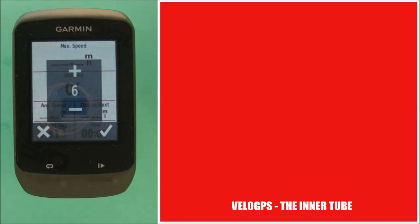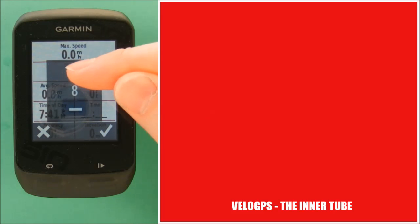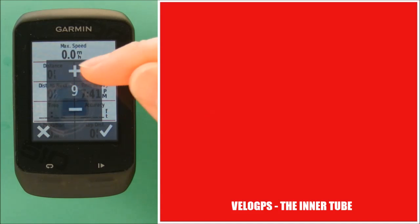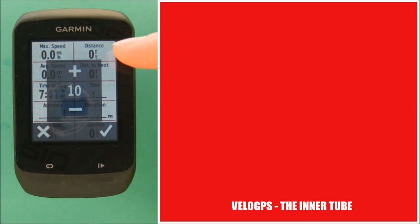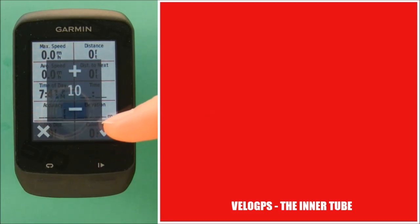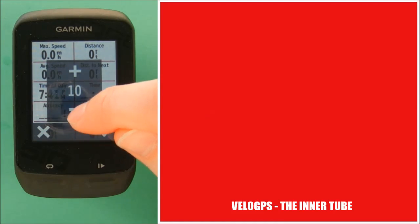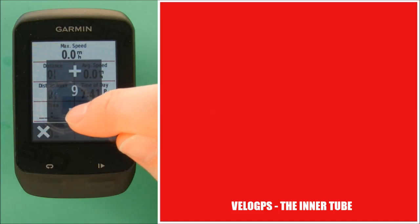Selecting page number one, you'll see that currently we have six data fields displayed and you can adjust that up to as many as ten data fields. But we tend to find that leaves the screen a little bit cluttered and difficult to view whilst you're cycling, so six is about the optimum we find for ourselves.